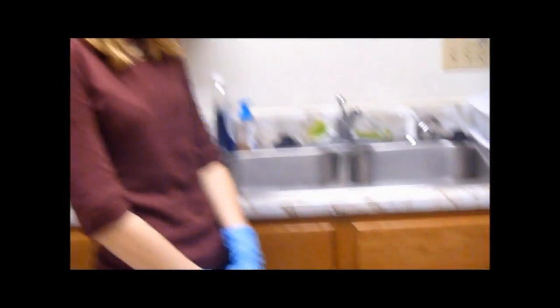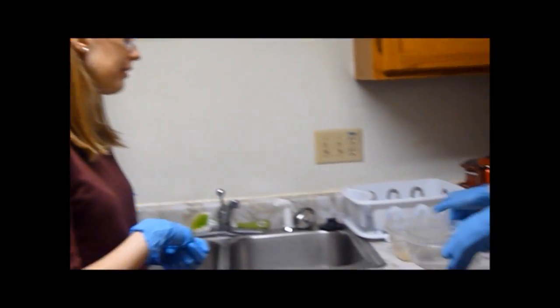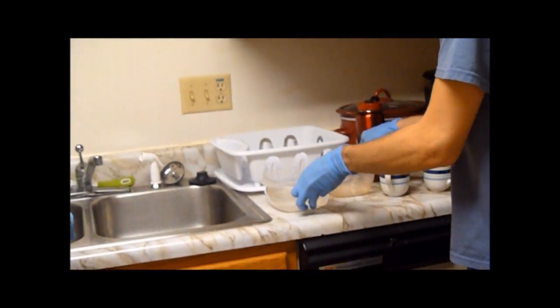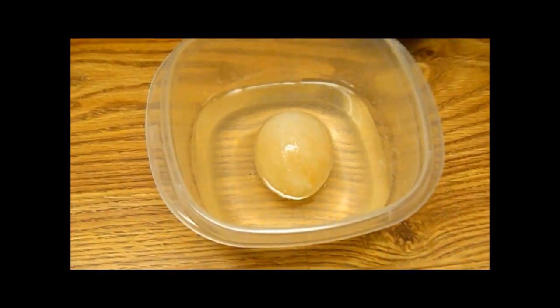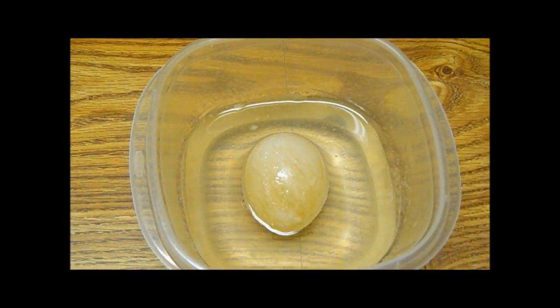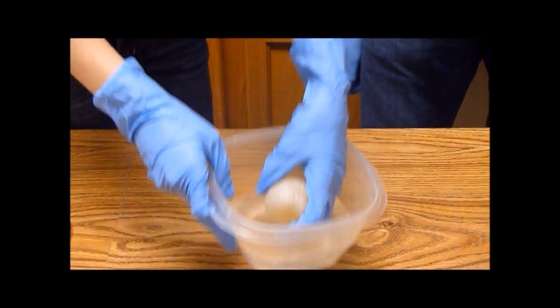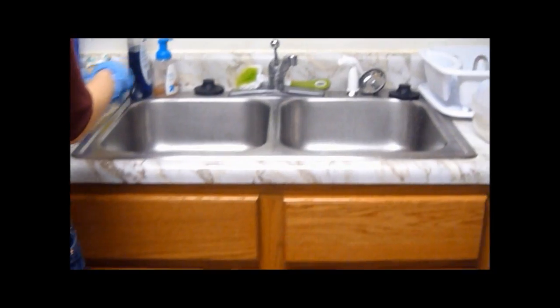So now, if we let the egg sit in the vinegar for 24 hours, most of the shell is already off the egg. However, not all of it is off. So we'll take the egg and rinse it under water.